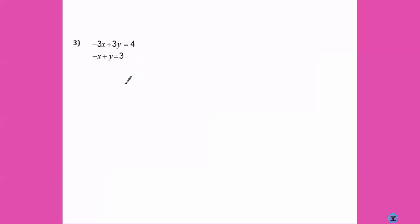Alright. Now this one isn't written as X equals or Y equals already. But it's pretty easy to rearrange this equation over here. I don't like having negative X's. So I'm going to add X to both sides and that would give me Y equals 3 plus X. So I'm going to take that and plug it in for Y in my other equation. So negative 3X plus 3 times 3 plus X equals 4. Now I'm going to distribute. Negative 3X plus 9 plus 3X equals 4.